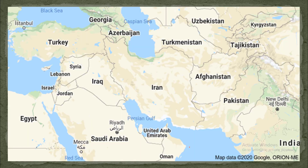This is the map of Iran. There are a total of seven countries that border Iran. Number one is Pakistan, second is Afghanistan, three is Turkmenistan, fourth is Azerbaijan, five is Armenia, six is Turkey, and seventh is Iraq.